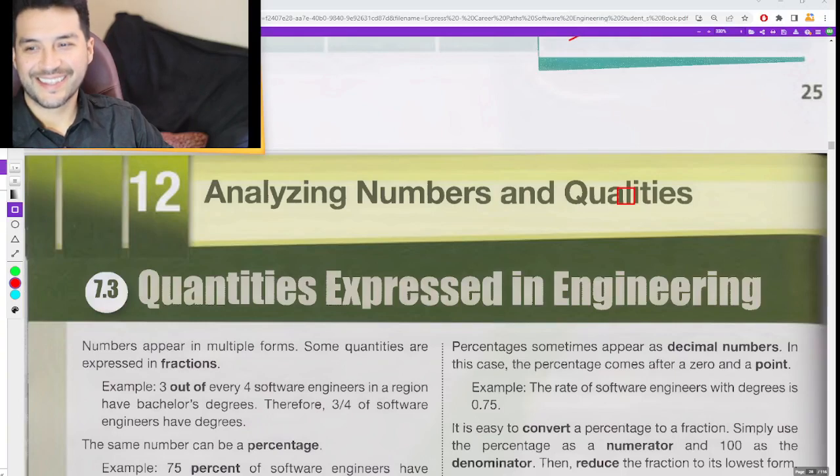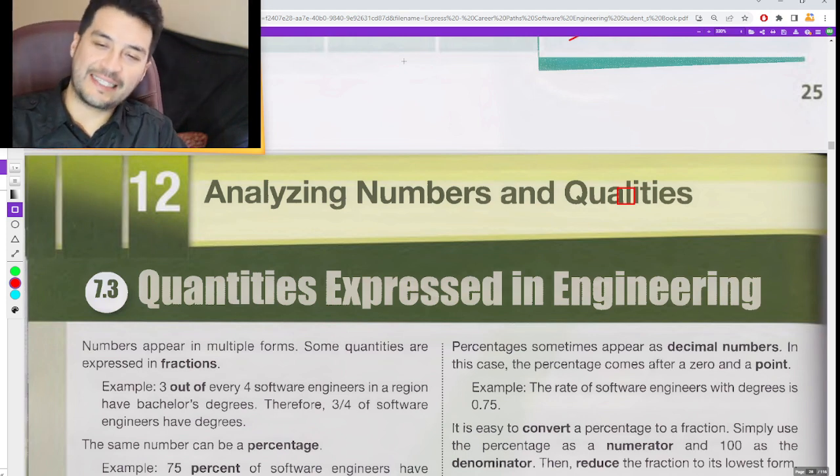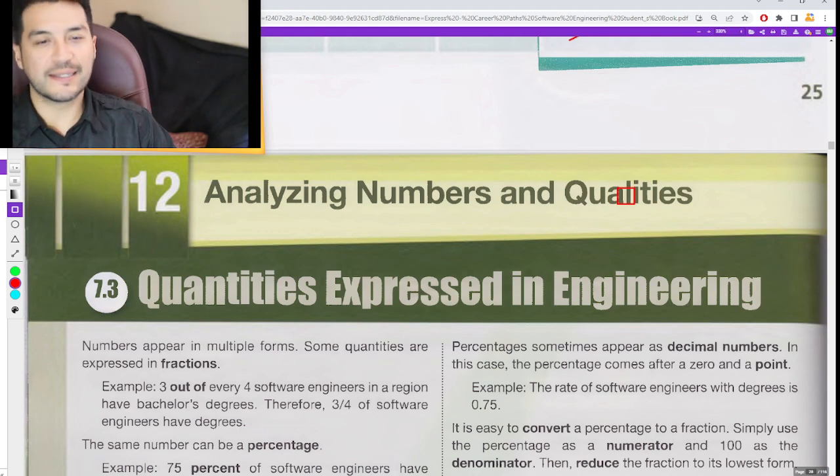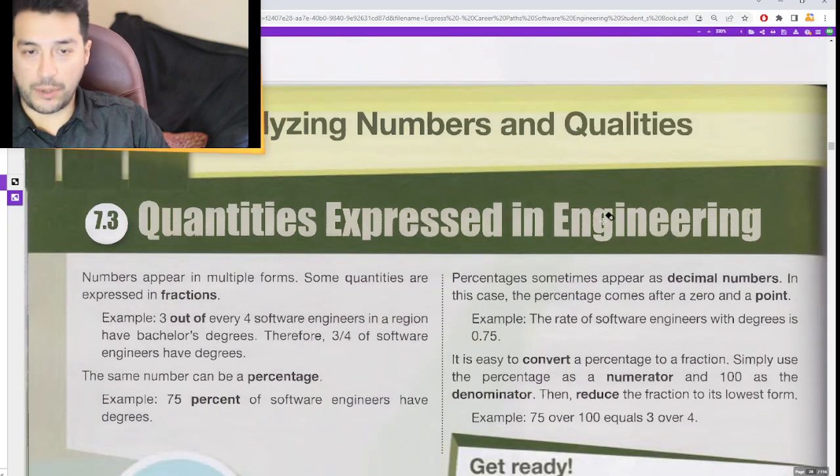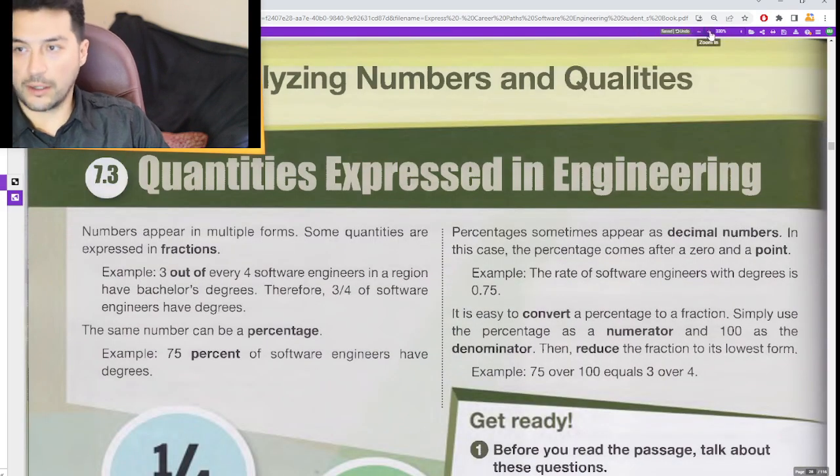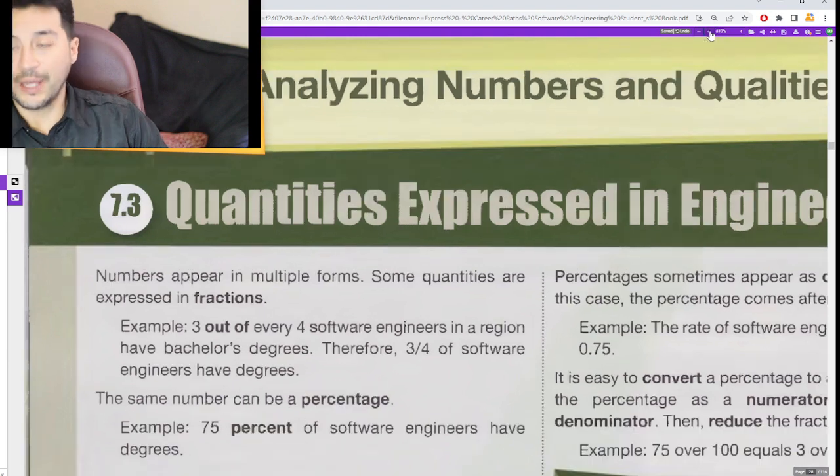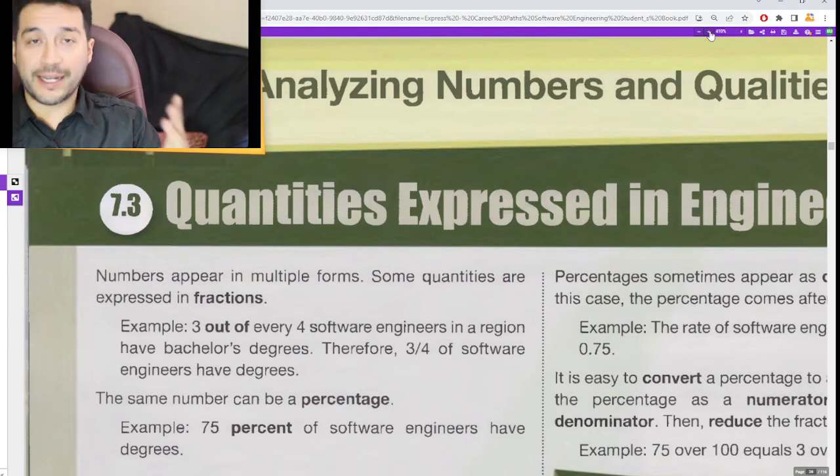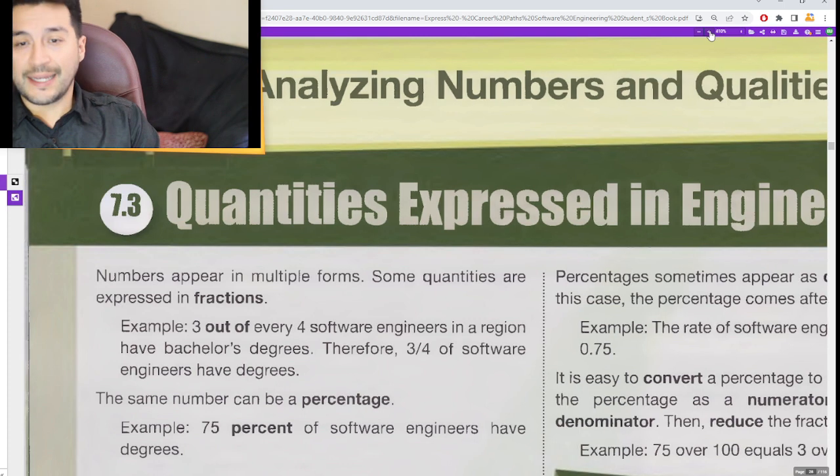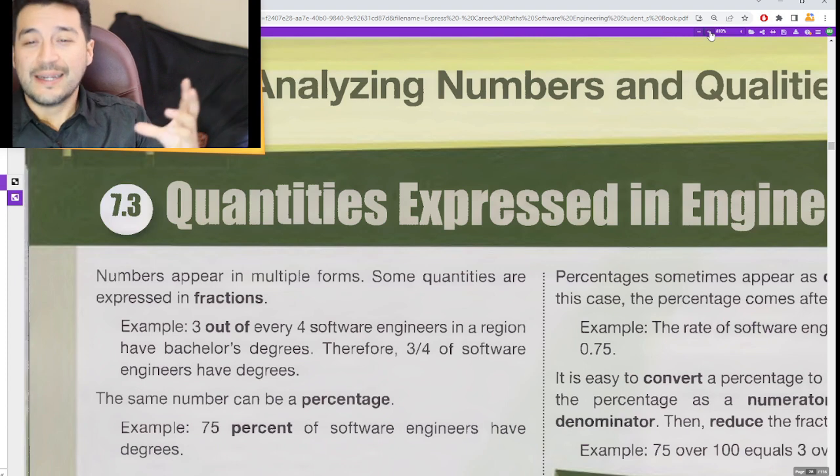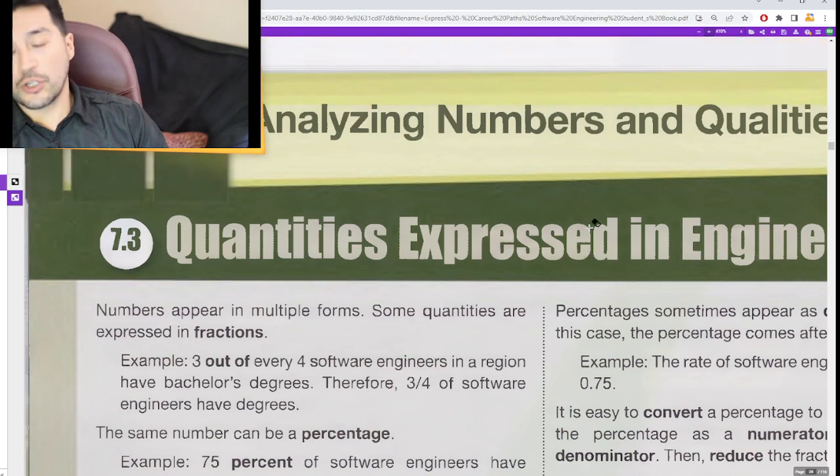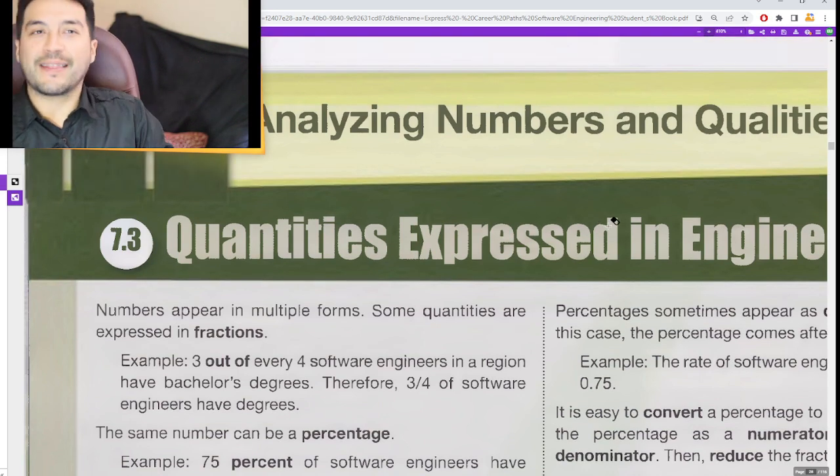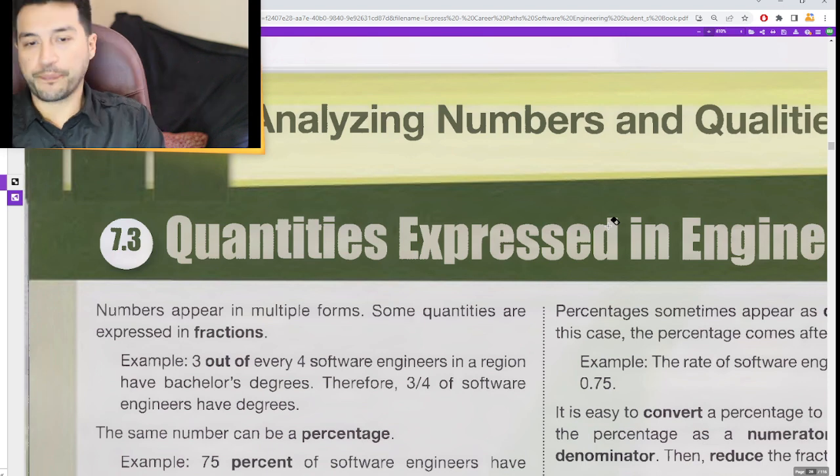Unit 12, Analyzing Numbers and Qualities. Alright guys, so this is another Math and Numbers unit or class here in your course English for Software Engineering. Esta es la clase 12, Analizando Números y Qualities. Tenemos otra clase de números y matemáticas en este curso de inglés para desarrollador de software, software developer.